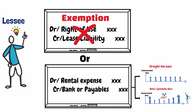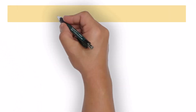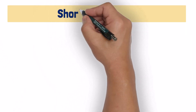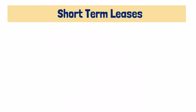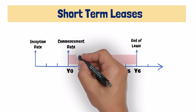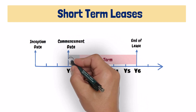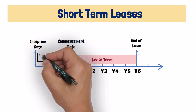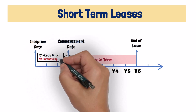A short-term lease is a lease that, from the commencement date, has a lease term of 12 months or less and does not include any purchase option.